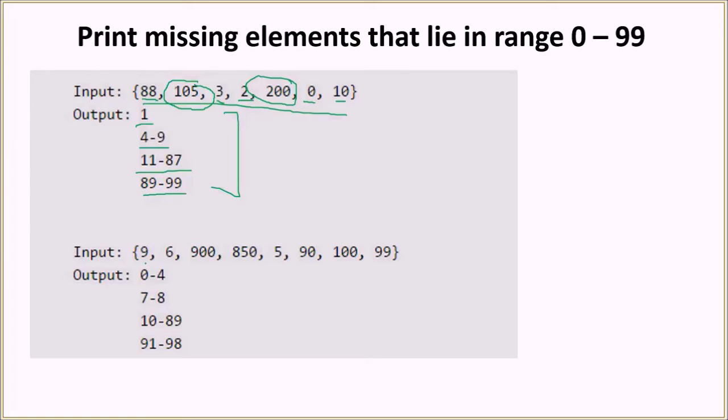Let us look at the second example. The numbers from 0 to 4 are missing because we have 5 inside the array. Then we have 6, then 7 and 8 are missing, then we have 9, then the numbers from 10 to 89 are missing, then we have 90, then the numbers from 91 to 98 are again missing, then we have the last element 99 here.